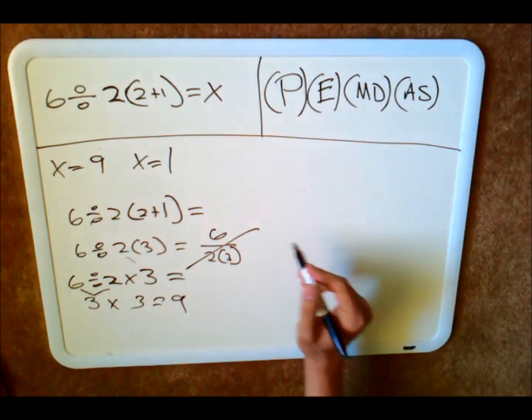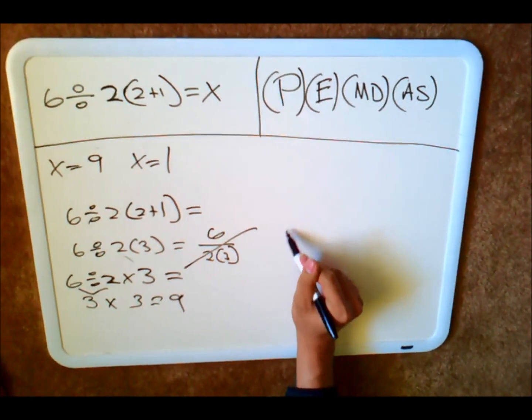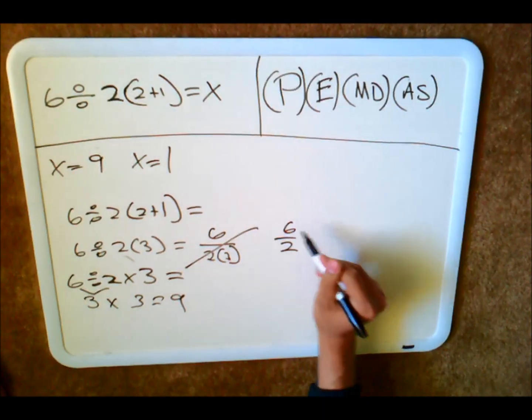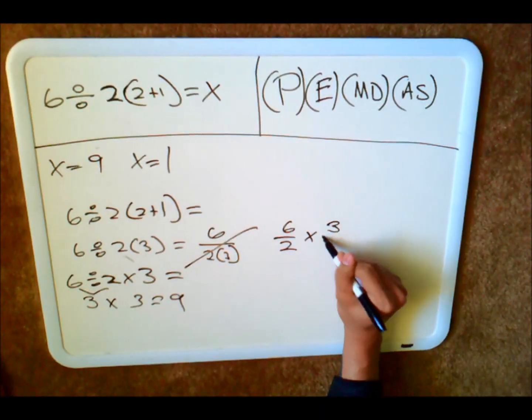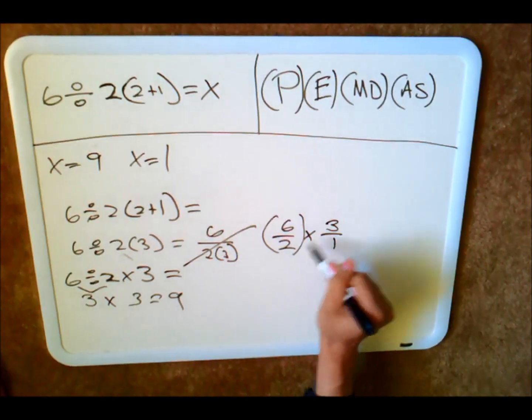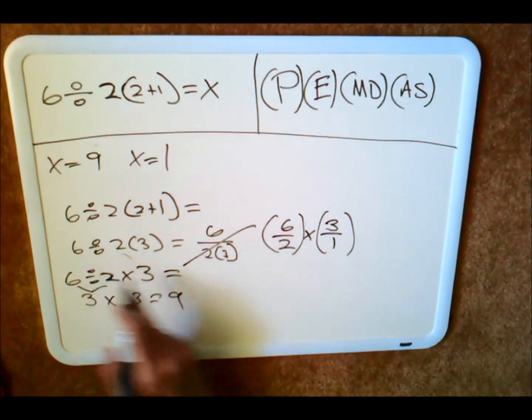If you want to write this as a fraction, what you need to write is 6 divided by 2 times that 3, which is equal to 3 over 1. This is actually the same problem as this one, not this way.